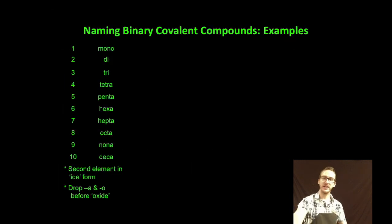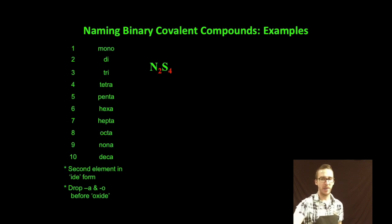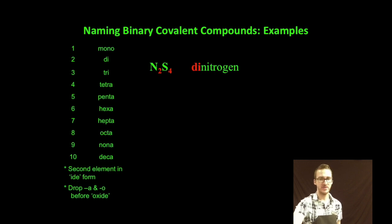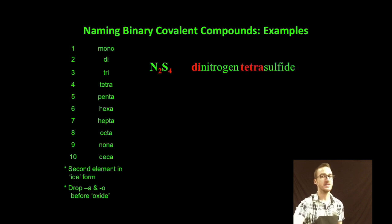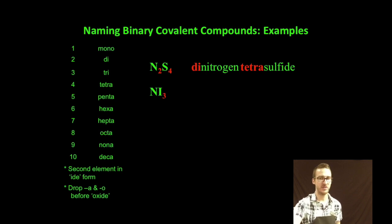So let's take a look at some examples. N2S4: my prefix for two is 'di,' so I end up with 'dinitrogen.' My prefix for four is 'tetra,' so I end up with not 'tetrasulfur' but 'tetrasulfide.' NI3: because it's the first element, I don't need a prefix if there's a subscript of one.